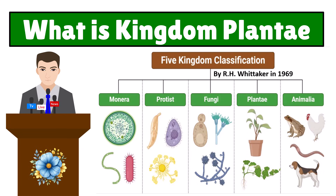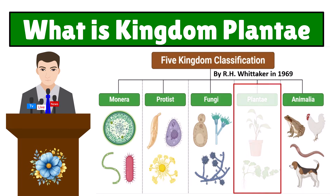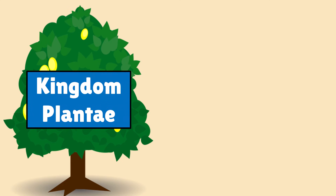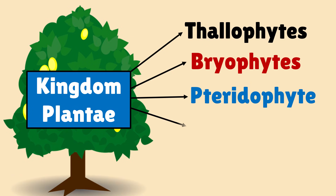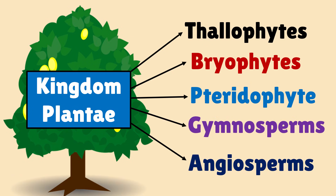This video will focus on Kingdom Plantae, which involves all plants present on Earth. These plants are multicellular and autotrophic — made up of many cells and capable of making their own food. Kingdom Plantae can be subdivided into five groups: Thallophytes, Bryophytes, Pteridophytes, Gymnosperms, and Angiosperms. In the next slide I will discuss all of these subdivisions in detail.